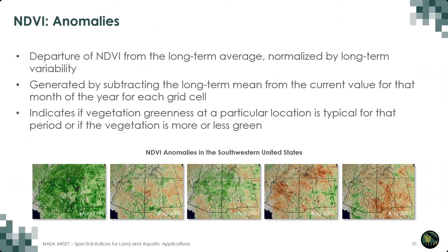NDVI anomalies are often used to show current vegetation patterns relative to long-term averages. This is calculated by subtracting the long-term mean from the current value, often done on a monthly basis. A negative anomaly indicates that vegetation is less green than normal, which may be indicative of drought-like conditions. In the example shown, you can see NDVI anomalies in the southwestern US, which experienced severe drought in the early 2000s. Brown areas indicate a decrease in greenness from 2000 to 2003 compared to a long-term average.